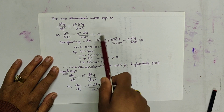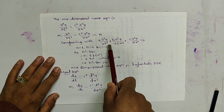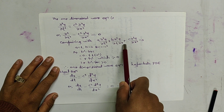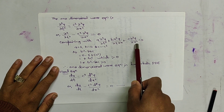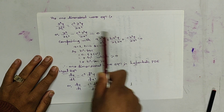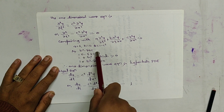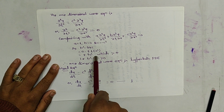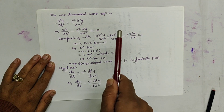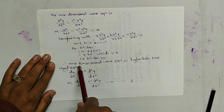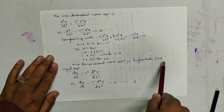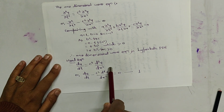Comparing with the standard form — A del²u/dt² + B del²u/dt dx + C del²u/dx² = 0 — we get A = 1, B = 0, and C = -c². So b² - 4ac = 4c², which is greater than zero. Since it is greater than zero, it is hyperbolic in nature. That means the one-dimensional wave equation is a hyperbolic partial differential equation.